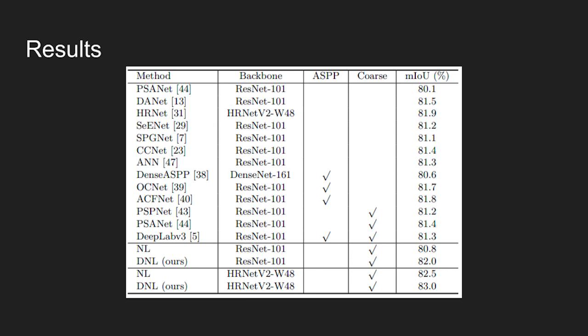Table shows comparison results for the proposed disentangled non-local network on the Cityscapes test set. Using a ResNet-101 as a backbone, the disentangled non-local network achieves 82% mean IOU, that's 1.2% better than that of standard non-local network.